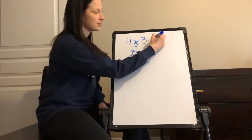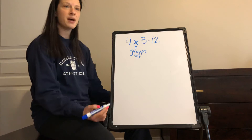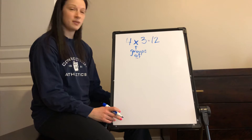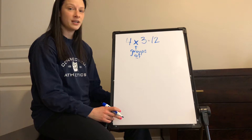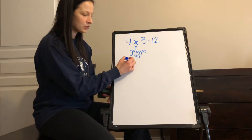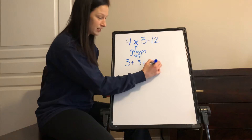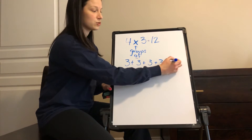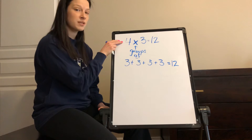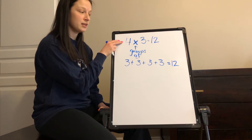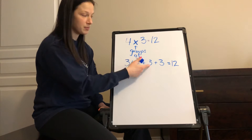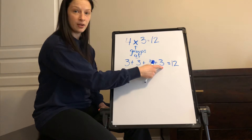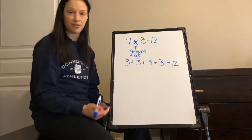A lot of us have memorized our facts — we know that four times three is twelve, but how do we get there? Four times three means four groups of three, which means three plus three plus three plus three: three, six, nine, twelve. Multiplication is actually repeated addition — we repeat the number we're adding and we do it this many times. That's how you end up with twelve.